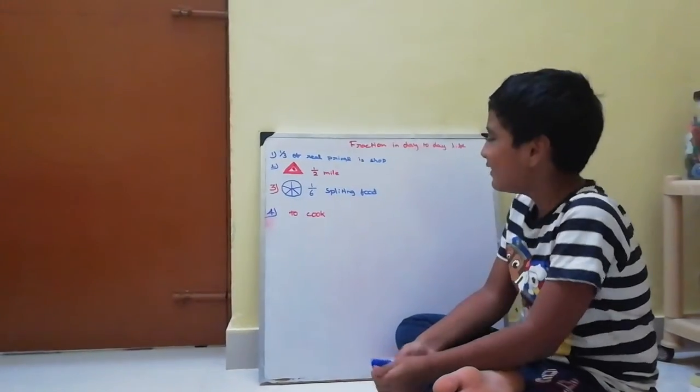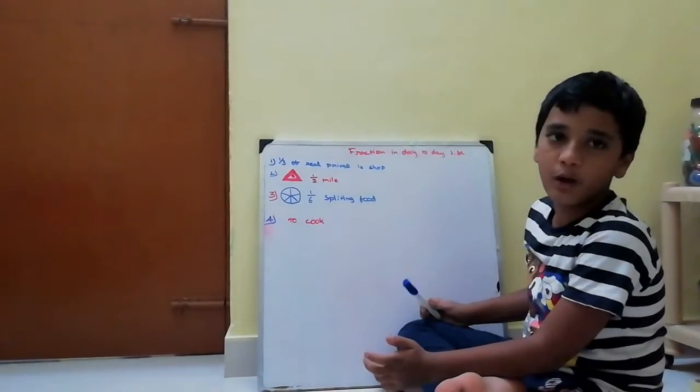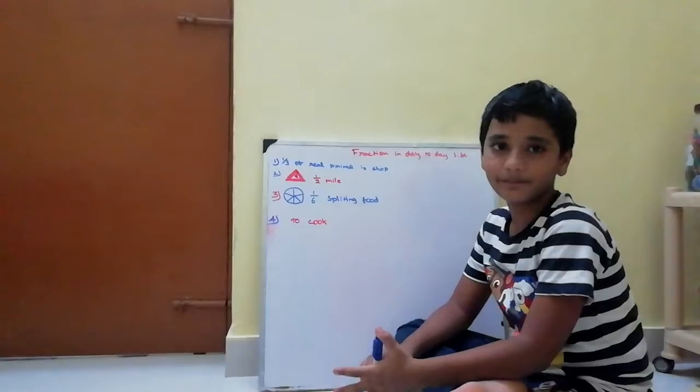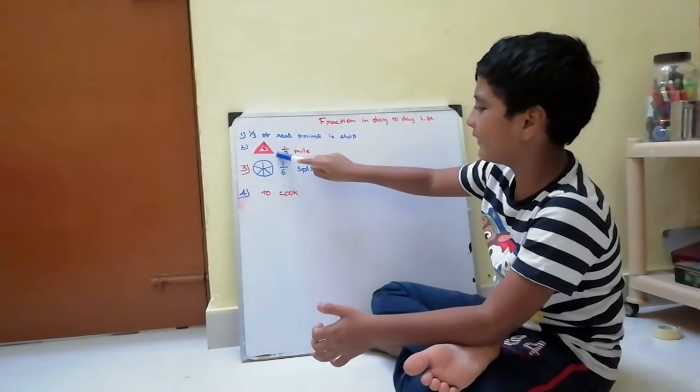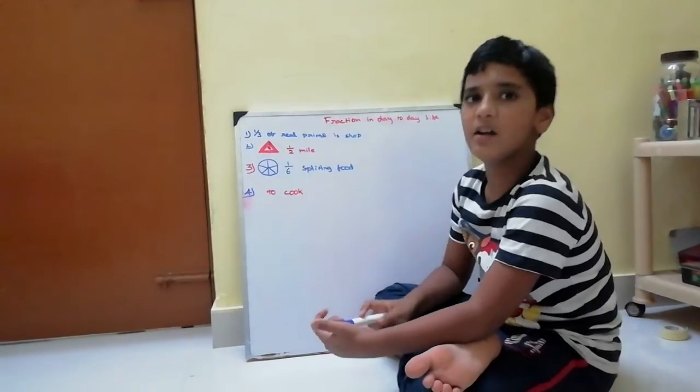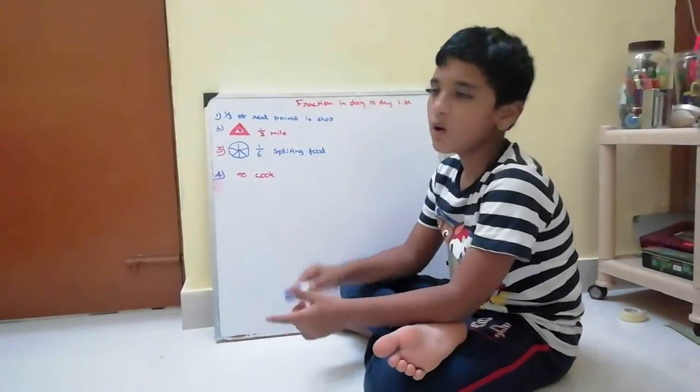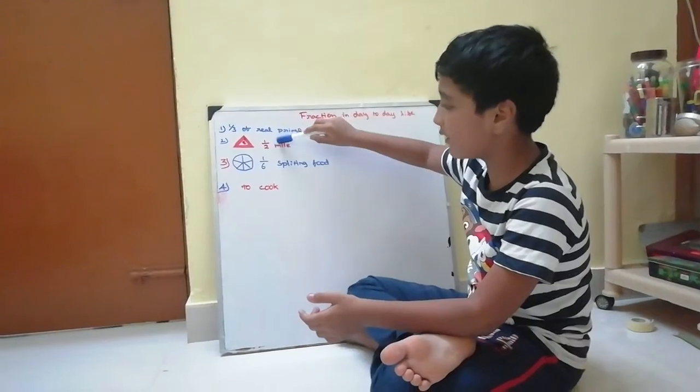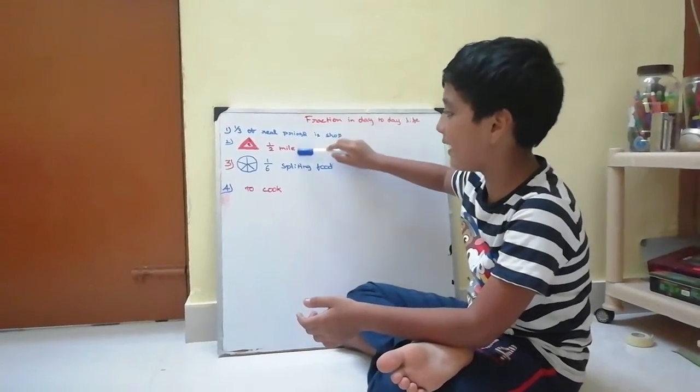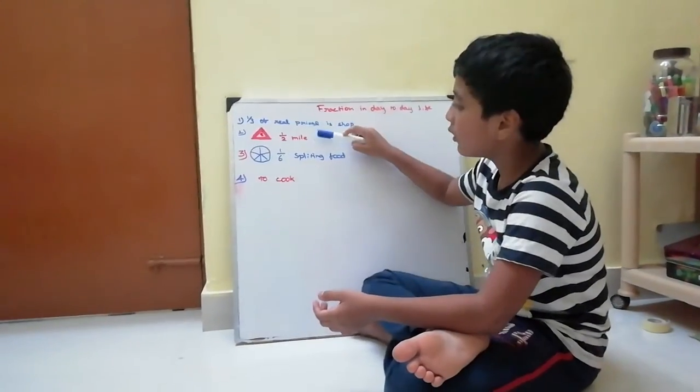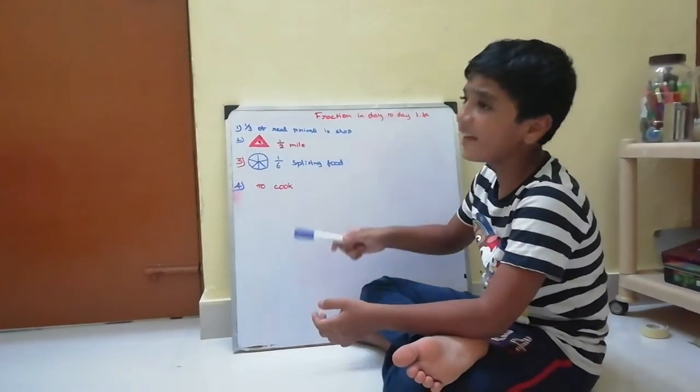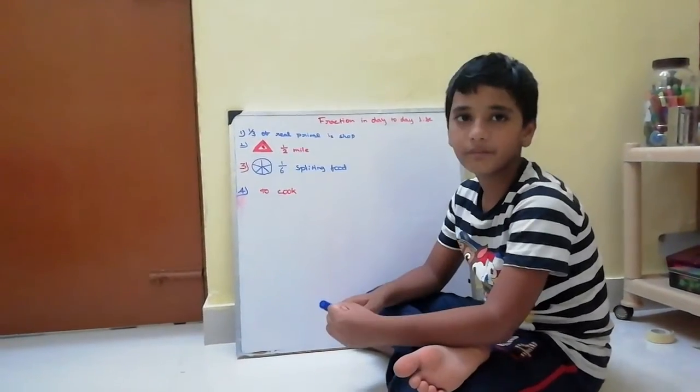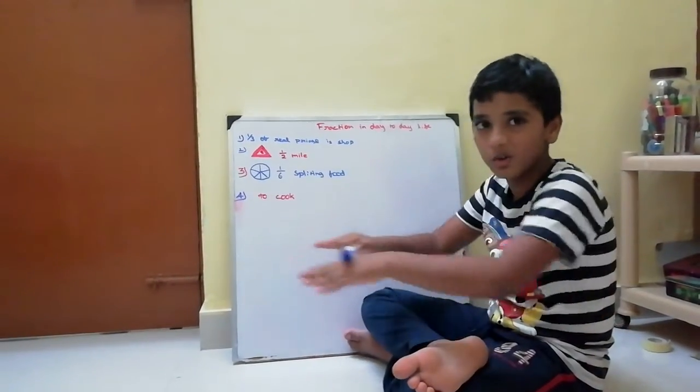Example: you are travelling to a native place. You will see a board like this. That example, 1 mile, 1 by 2 miles - too much turnings are there in the road, so go slow.